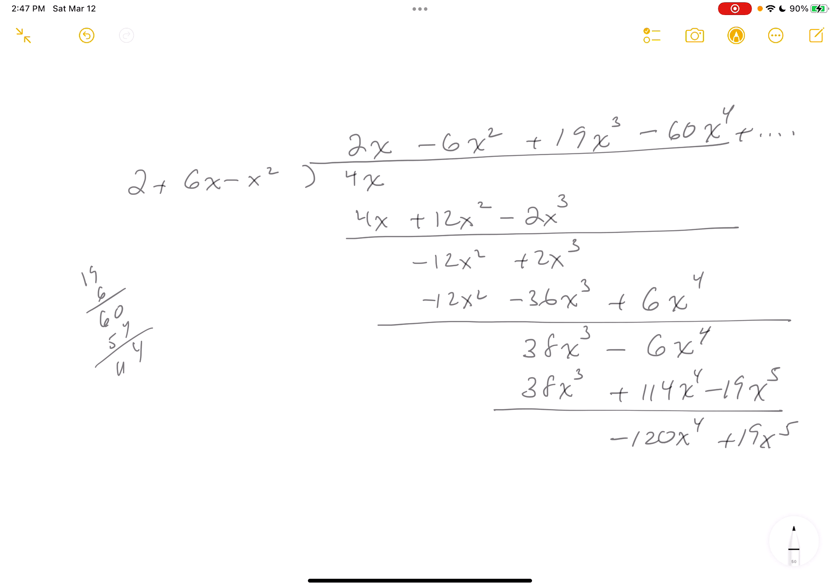So let's get the red pen out. And let's see what we got. I got the 2X, I got minus 6X squared, 19X cubed, minus 60X to the fourth. We did fine. Thank you.